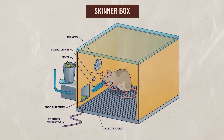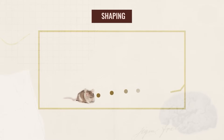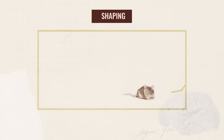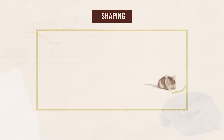Skinner put a rat inside a box which had a speaker, a light, and a lever. At first, the rat would get a food pellet whenever it moved closer to the lever, but eventually the rat would only get a food pellet when it pushed down the lever. This is shaping in action.